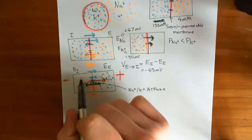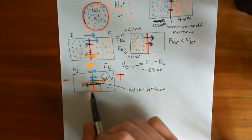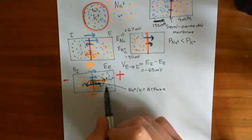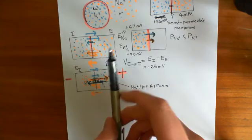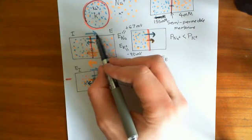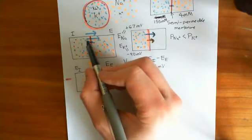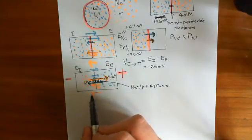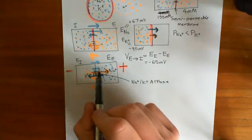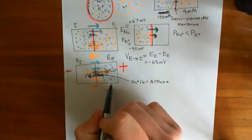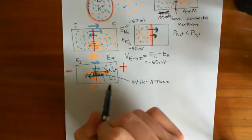That will make it more and more difficult to move potassium ions from the intracellular to the extracellular compartment, and also more difficult to move sodium ions from the intracellular to the extracellular compartment. Eventually, the net movement of potassium will equal the net movement of sodium in the opposite direction, and at that point you'll have an electrical equilibrium.